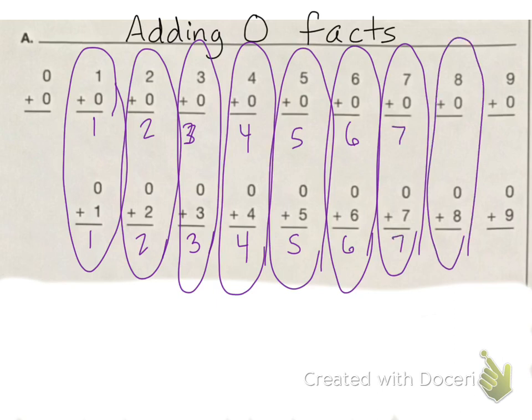You can see eight plus zero is eight, and zero plus eight is eight. Nine plus zero is nine, and zero plus nine is nine.